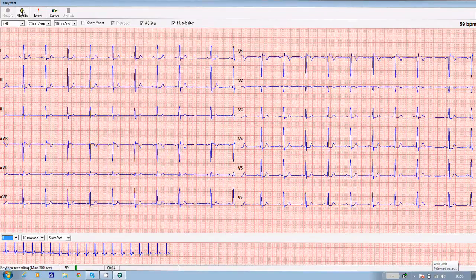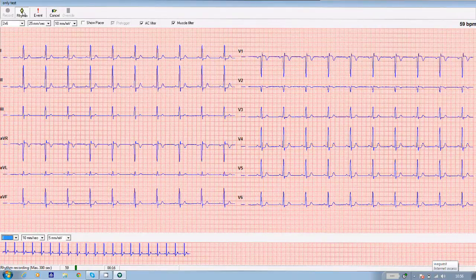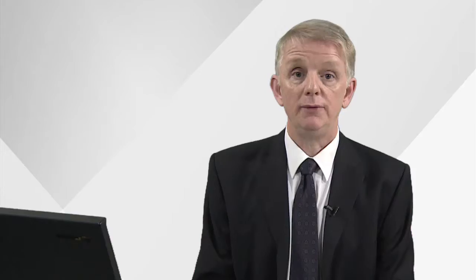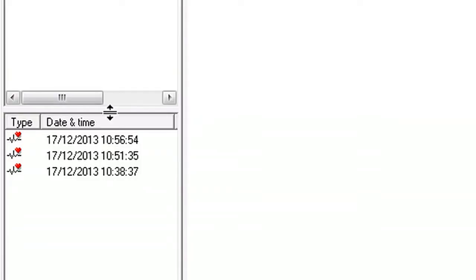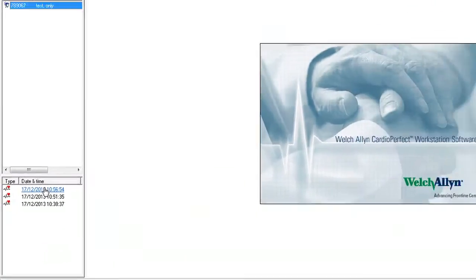But if you want to stop the recording before then, click on the rhythm tab again. If you ever want to look at previous recordings, open the software, highlight your patient's name, and in the bottom left hand corner of the screen, you'll see a list of any other tests. To view them, just highlight the one you'd like to study and it'll appear on screen.